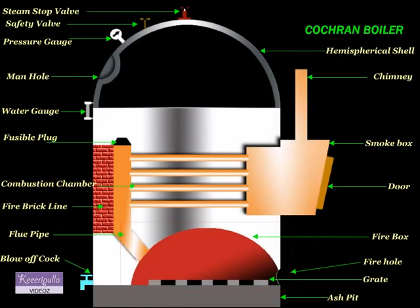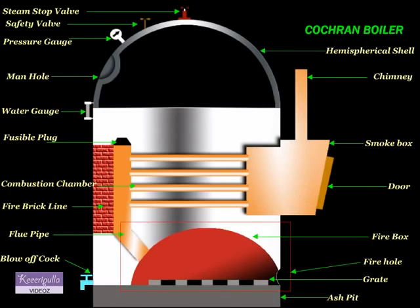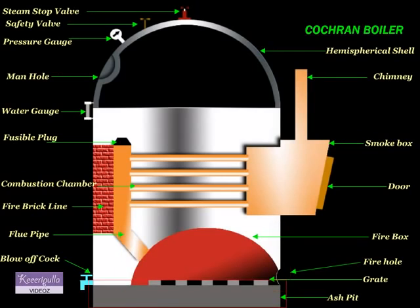Grate: It is a metal grill on which the fuel burns. The burnt-out fuel gets collected in the ash pit. The ash pit collects the burnt-out fuel. Flue pipe is a short passage which connects the furnace with the combustion chamber.